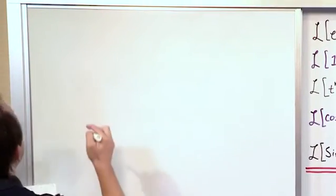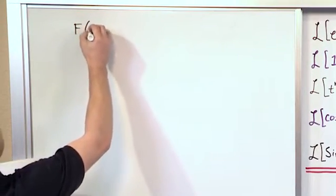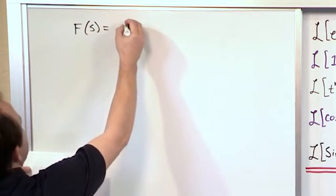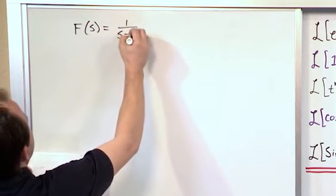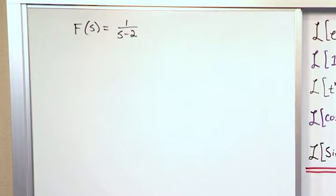We'll start with some easy problems and then we'll work our way up. So if you're given a function of s that's 1 over s minus 2, you want to transform this back to the time domain.